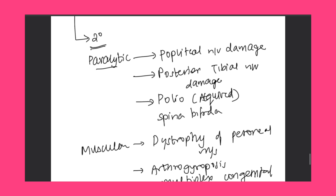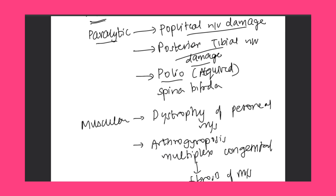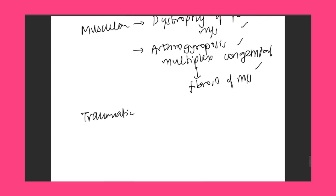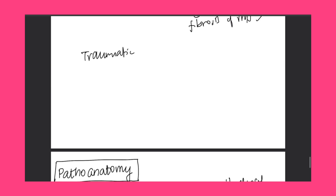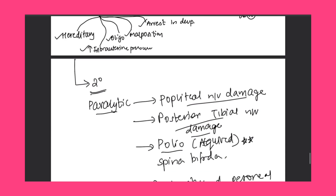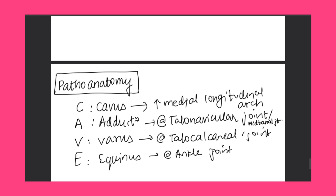Secondary etiology: it could be paralytic, muscular, or traumatic. In paralytic causes we see popliteal nerve damage, posterior tibial nerve damage, and polio — in polio it is acquired talipes equinovarus, not congenital. Spina bifida is also a cause. Muscular causes include dystrophy of peroneal muscles and arthrogryposis multiplex congenita, where there is fibrosis of muscles. Other causes include traumatic.